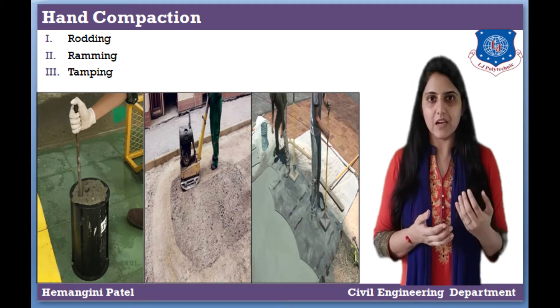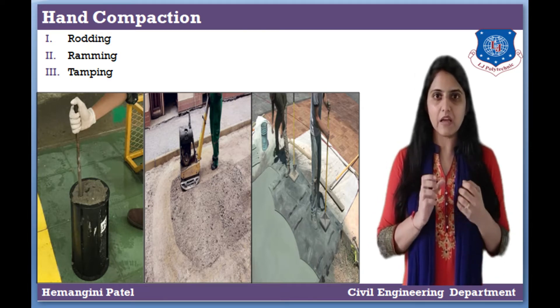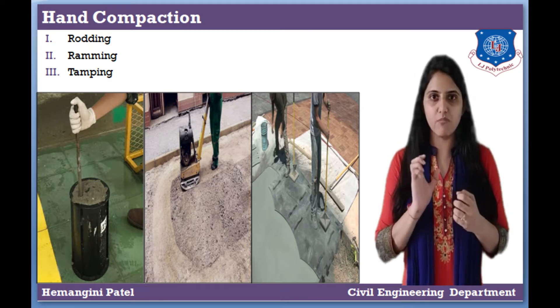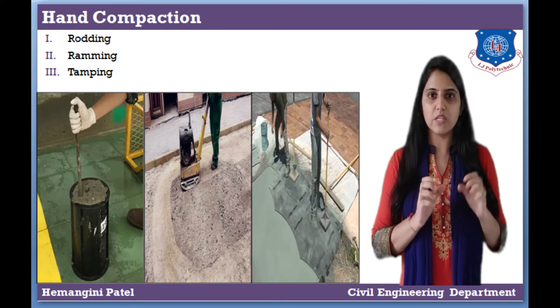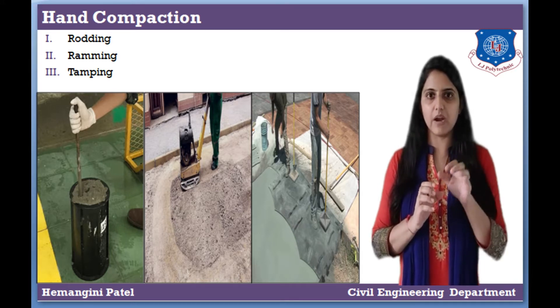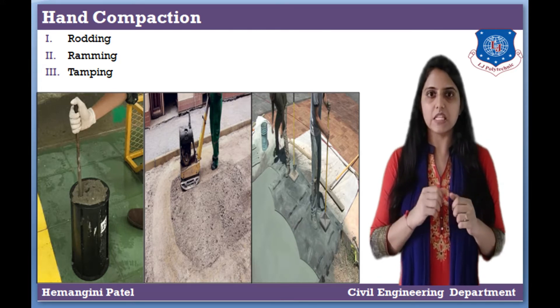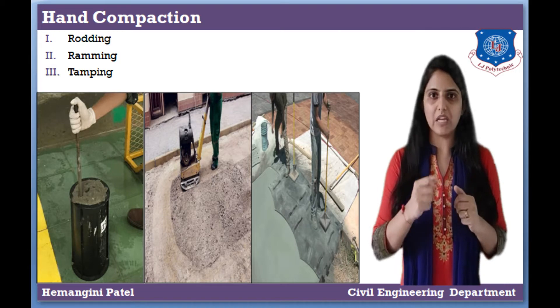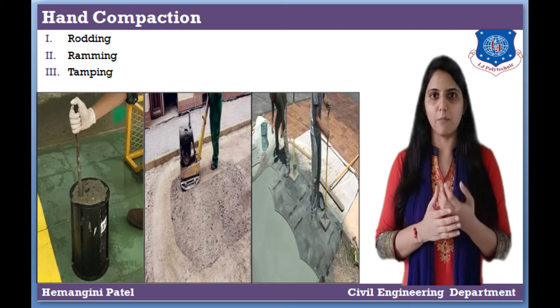Next is tamping. In tamping, we use wooden blocks of 10 cm by 10 cm, which are used for tamping and compaction.